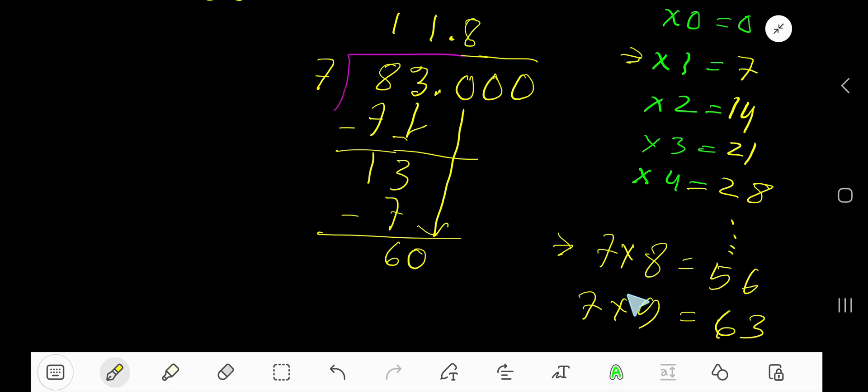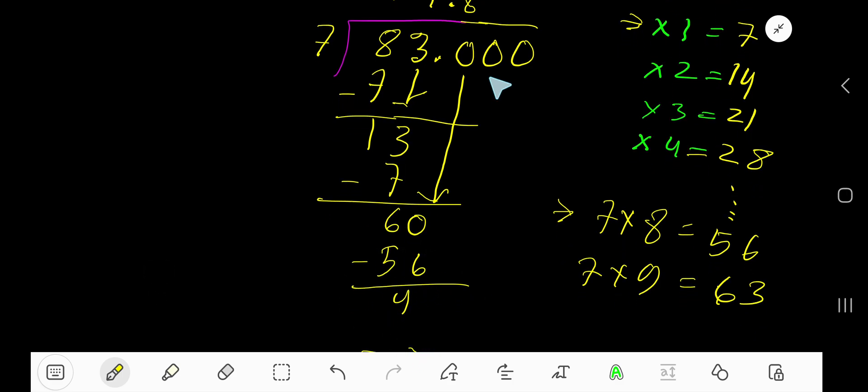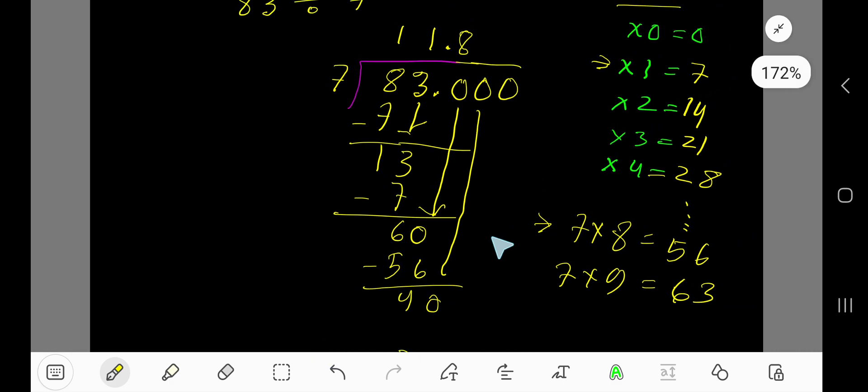Write 8. 8 times 7 is 56. If you subtract, you're getting 4. Bring down the next zero, so you're getting 40. Now 7 goes into 40 how many times? 7 times 6 equals 42, but here it's 40, so 5 times.